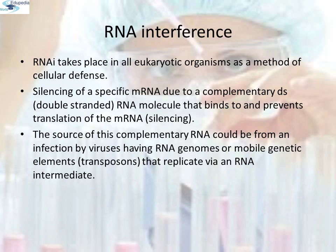RNA interference. A novel strategy was adopted to prevent infestations in plants, based on the process of RNA interference or RNAi. RNAi takes place in all eukaryotic organisms as a method of cellular defense. This method involves silencing of a specific mRNA due to a complementary double-stranded RNA molecule that binds to and prevents translation of the mRNA — that is called silencing. The source of this complementary RNA could be from an infection by viruses having RNA genomes or mobile genetic elements called transposons that replicate via an RNA intermediate.